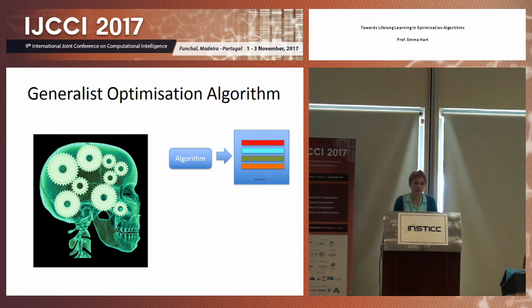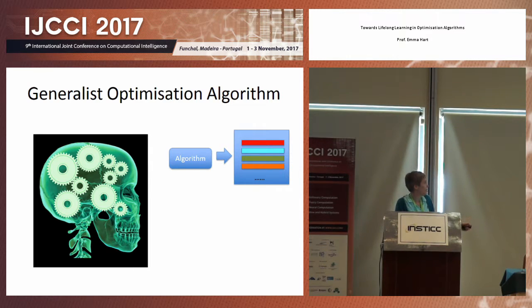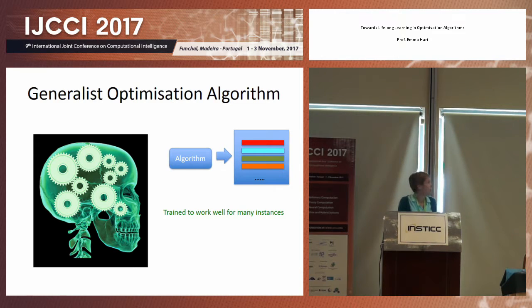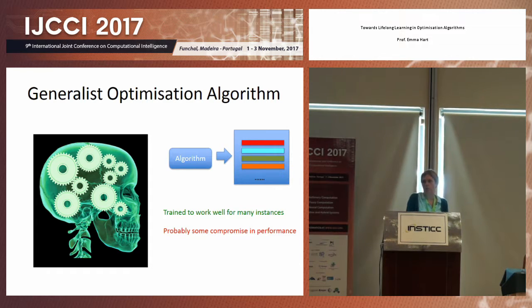The first is what I call a generalist algorithm. We take some algorithm — it doesn't matter if it's an evolutionary algorithm, a hyper-heuristic, or however it's derived — and we take some training set of instances, hopefully covering a wide variety of situations, and we teach or tune our algorithm by changing parameters or selecting different operators to work well across this large set of problems. What we're hoping is that if we inject a new instance, the same algorithm will do well. But if you train over a large set like that, there's probably some compromise in performance, because you're trying to find a generalist algorithm that works well in many scenarios — so it's not specifically tuned to each individual scenario.